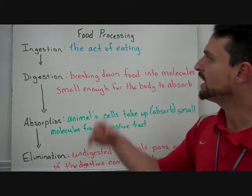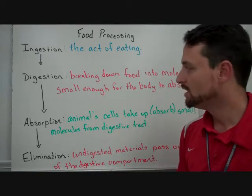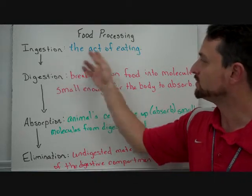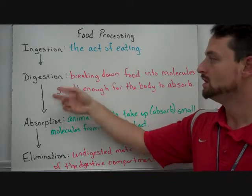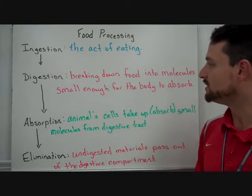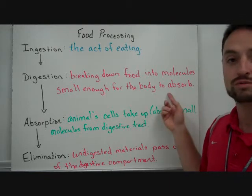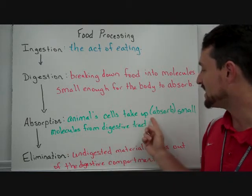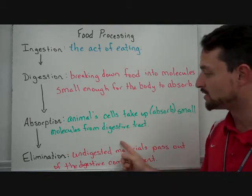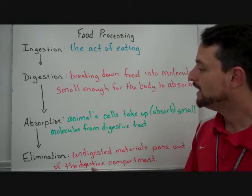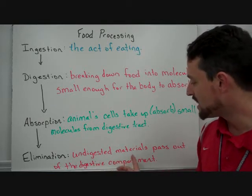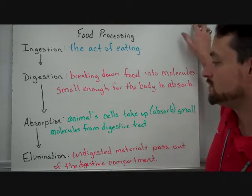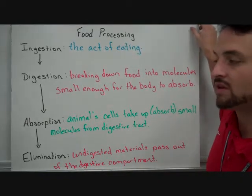When we're looking at food processing, there are really four main areas. Ingestion, which would be the act of eating. Digestion, breaking down food into molecules small enough for the body to absorb. Absorption, animal cells taking up or absorbing small molecules from the digestive tract. And then elimination, where undigested materials pass out of the digestive compartment — you've got to get rid of the stuff that you don't need.